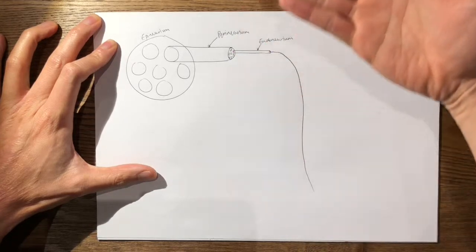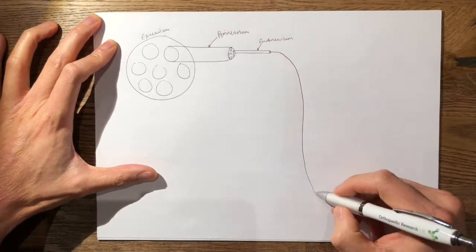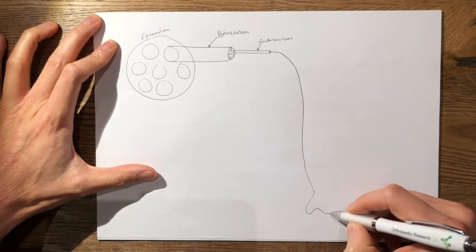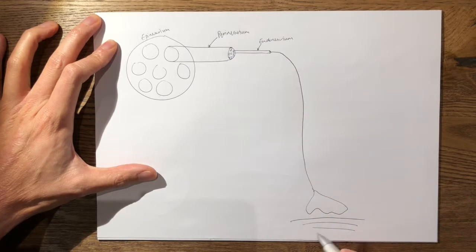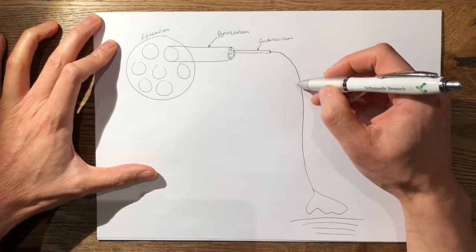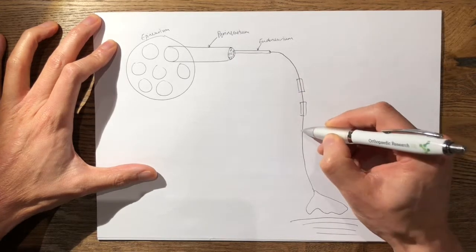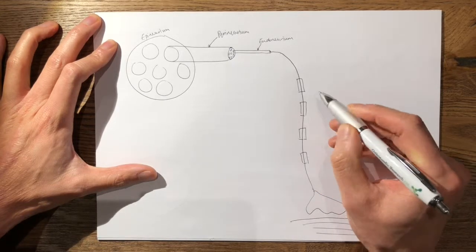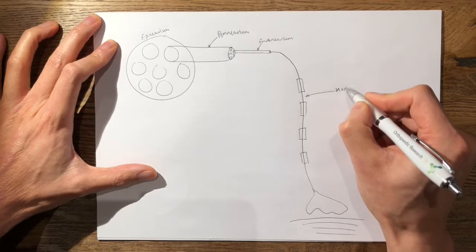Now if I draw a coronal slice through the nerve—say this is a peripheral motor nerve—and then you'll have your neuromuscular junction here supplying your skeletal muscle. If we take a coronal slice, you'll find that it is myelinated with Schwann cells. And in between the Schwann cells you have your nodes of Ranvier.